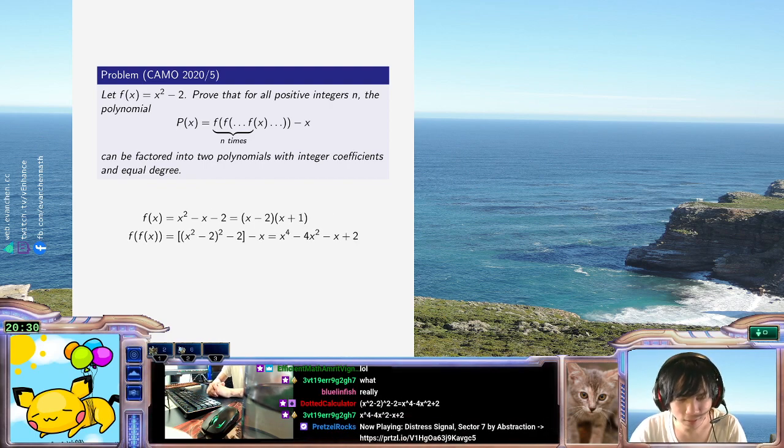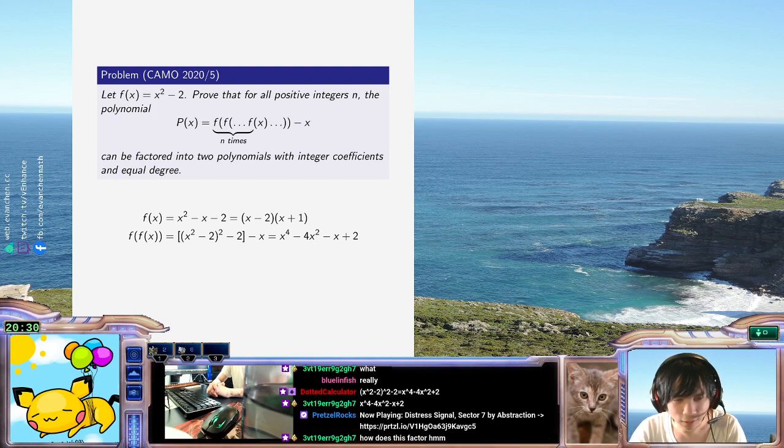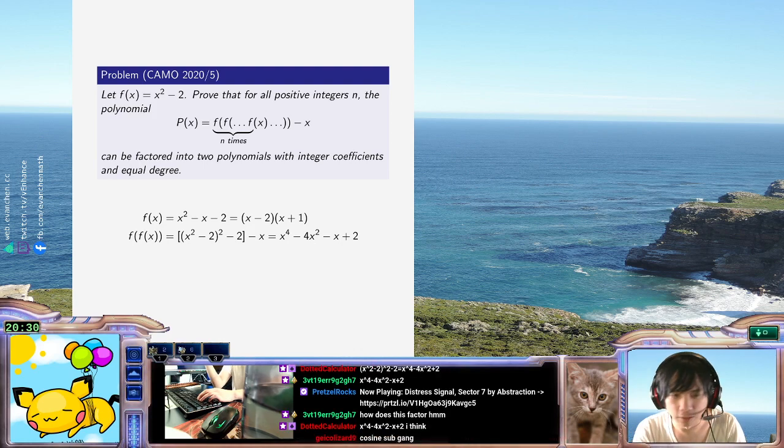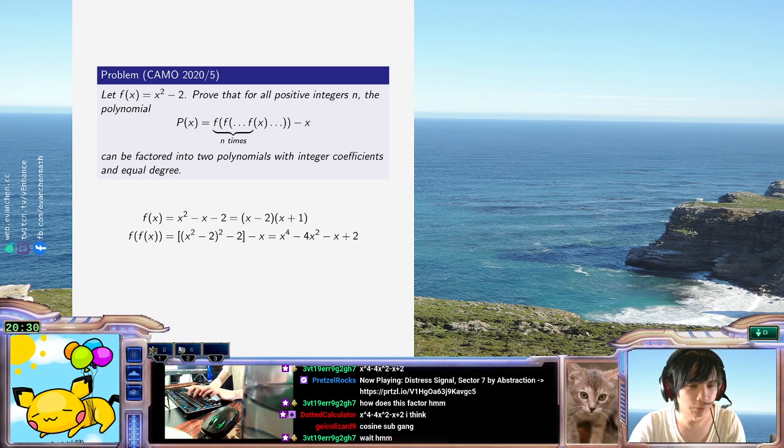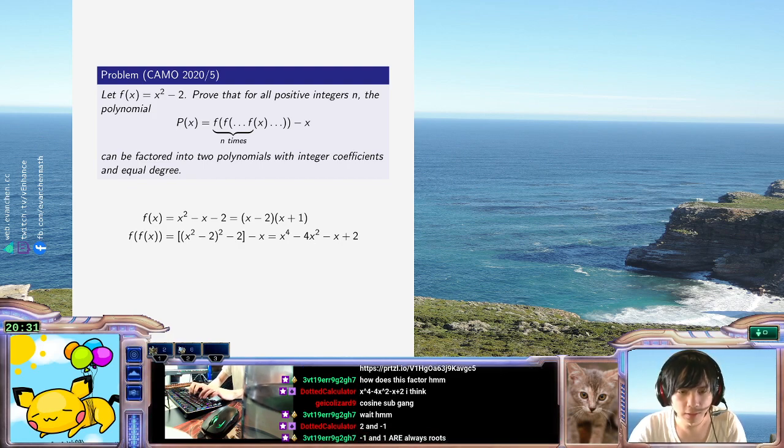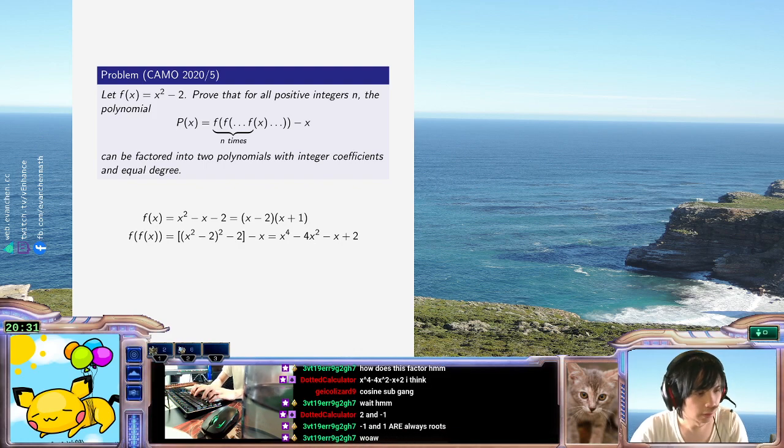Alright, so x to the 4 minus 4x squared plus 4 minus x... Okay, so this does not have any linear roots, I believe. No, it is x equals 2 as a root. Oh, x equals- Is x equals 2 always a root? Yeah, x equals 2 is always a root. That seems like it's useful to know. Is negative 1 always a root? Yeah, okay, so we already have two fixed points. Like, x equals minus 1, x equals plus 2 are always roots. And so I don't even care what the other factor is. That just kind of works here.